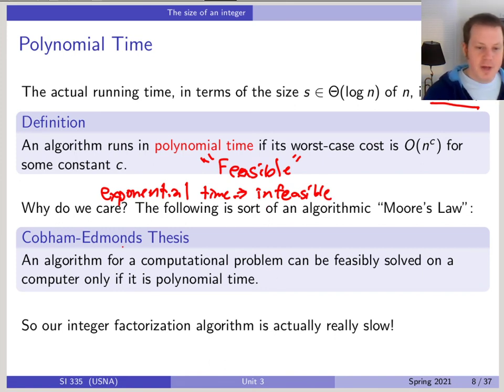And there's a kind of name for this idea, it's called the Cobham-Edmunds thesis. It's not really a theorem or something that we could prove. It's just an idea from kind of early days of computational analysis, is just saying that if something's polynomial time, then it can be feasibly solved on a computer. Maybe if it's not polynomial time, then we can't really expect to solve it with computers in a reasonable amount of time. You can kind of relate this to Moore's law and the idea that the processing power of computers is increasing exponentially as time goes on.